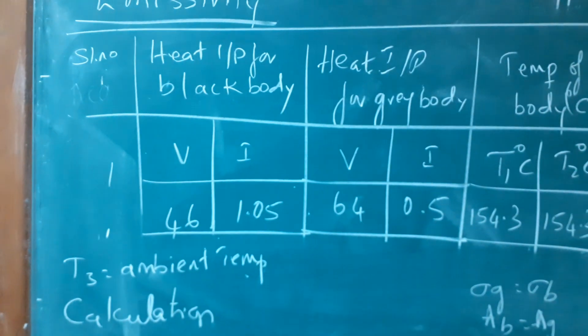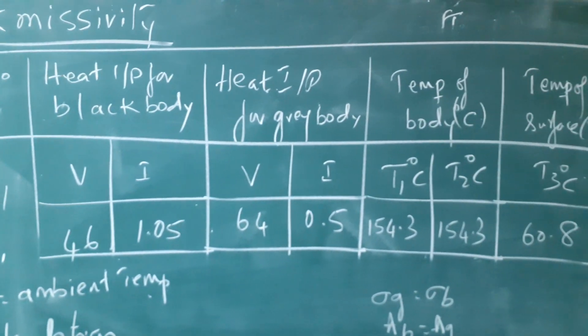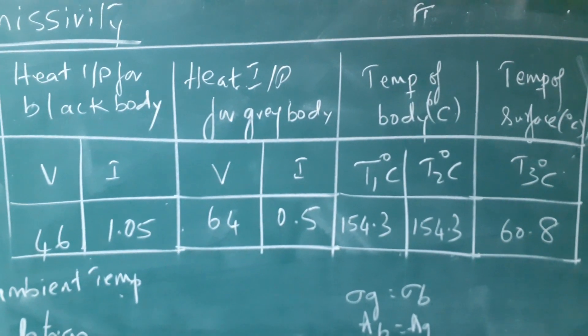Now, heat input for black body: voltage 46, current 1.05 amps. Heat input for gray body: voltage 64, current 0.5.